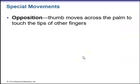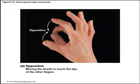Opposition is when the thumb moves across the palm to touch the tips of the other fingers. This is what makes humans unique — we have opposable thumbs that can touch the other fingers of the hand.